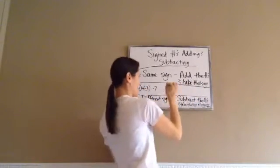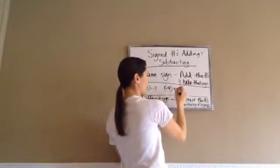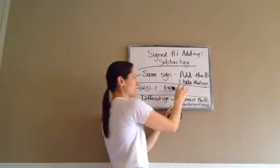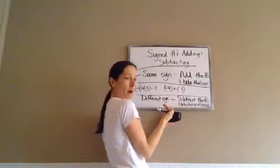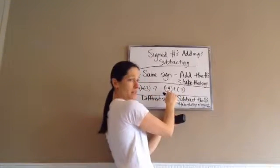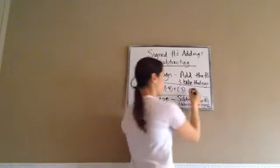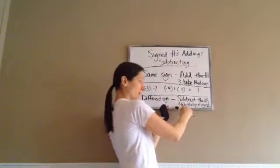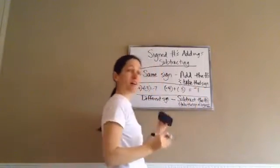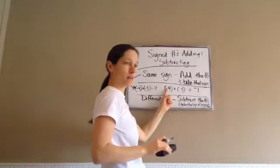Different signs — negative and a positive. Sometimes the plus won't be there to show a positive number; if it doesn't have a positive sign, it still means that number is positive. So if I have different signs, what am I supposed to do? Subtract the numbers. What is 4 minus 3? 1. So the answer is 1, but it's negative 4 — we take the sign of the biggest number. Which one's my bigger number? 4. And it's negative 4, so the sign is negative.